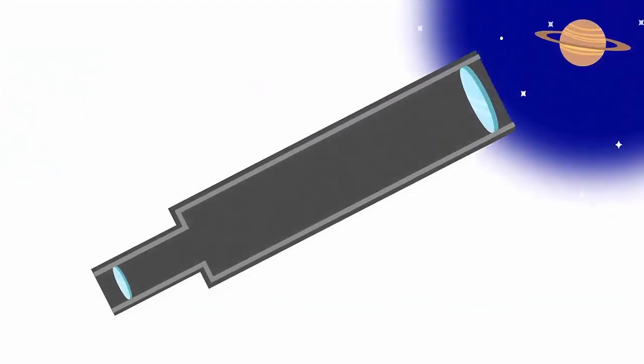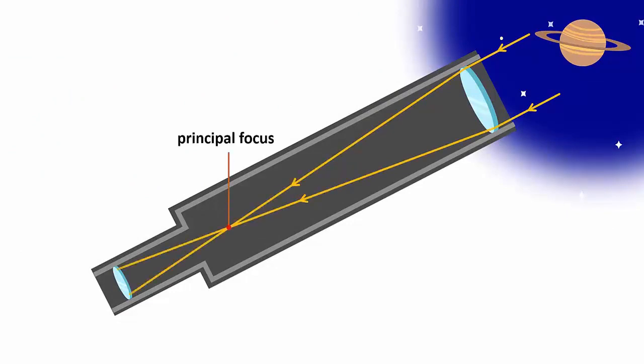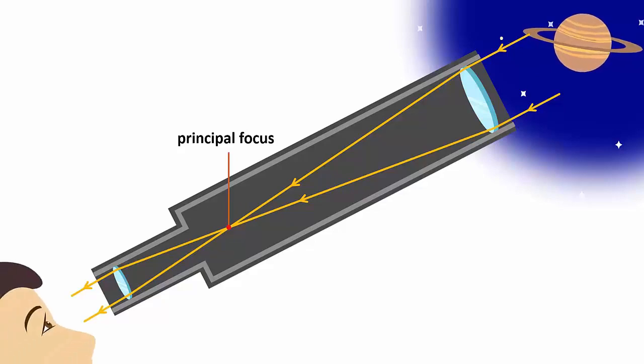Light comes in from a distant object, enters the objective lens, and refracts to a point called the principal focus. The eyepiece collects the light from the objective lens and creates a virtual image. This virtual image appears closer to our eyes than the real object, which is why it looks bigger. This is how we see a magnified image of objects at a distance through a telescope.